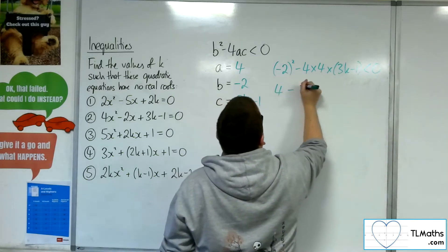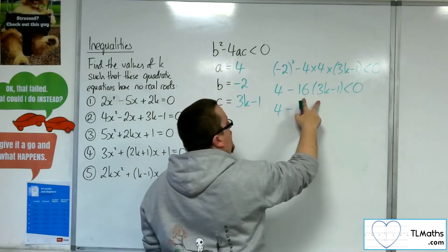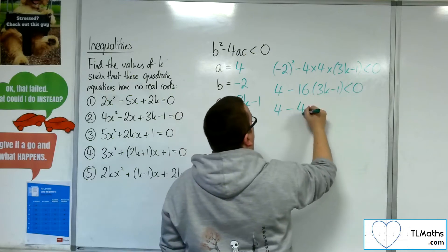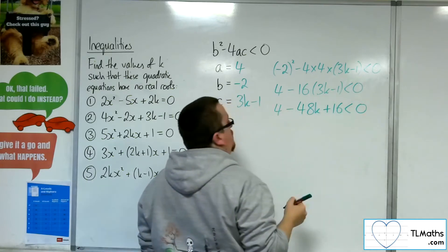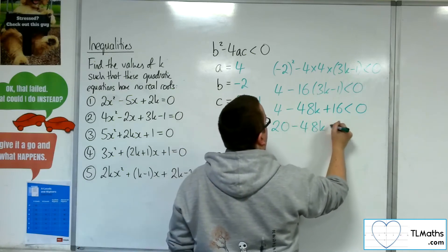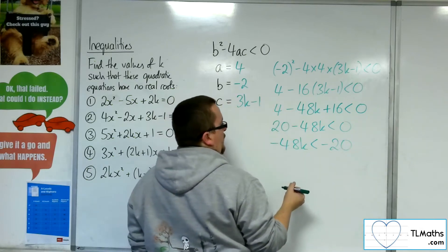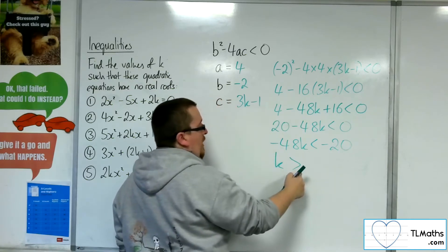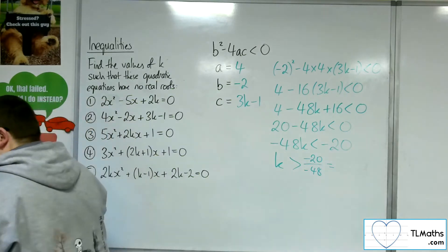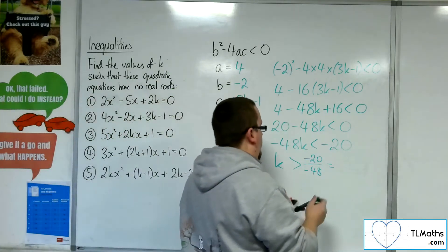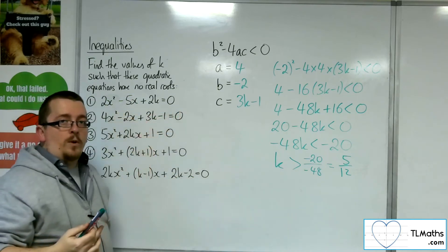So minus 2 squared is 4, and we're going to have 16 lots of 3k minus 1. So 16 lots of 3 is 48, giving take away 48k, and then minus 16 times minus 1 is plus 16. That's got to be less than 0. So 20 take away 48k is less than 0. Take the 20 from both sides, then divide both sides by minus 48 — so k will be greater than (sign changes because we're dividing by a negative) minus 20 over minus 48, which gives us 5 twelfths. So k would have to be greater than 5 twelfths for that quadratic equation to have no real roots.